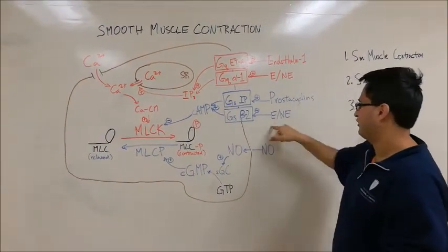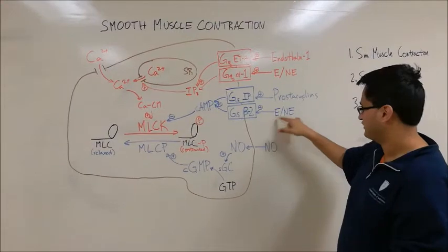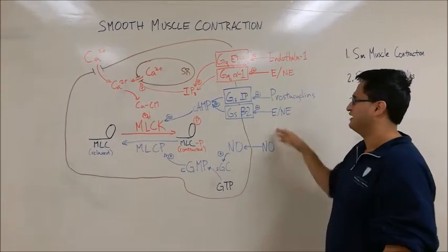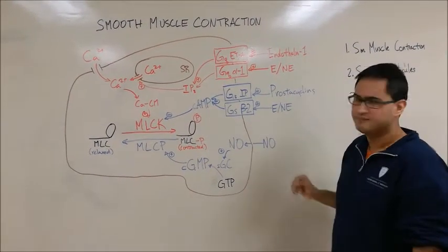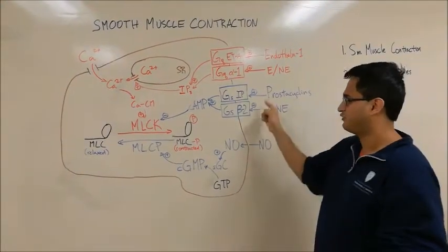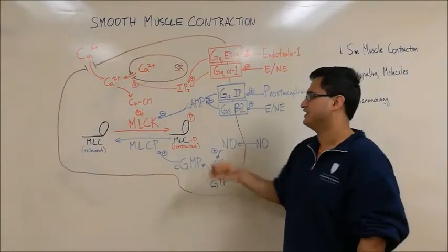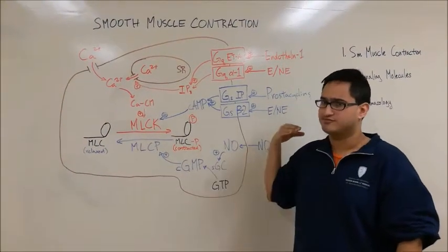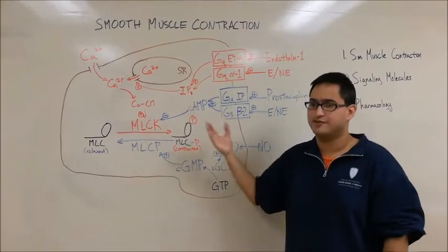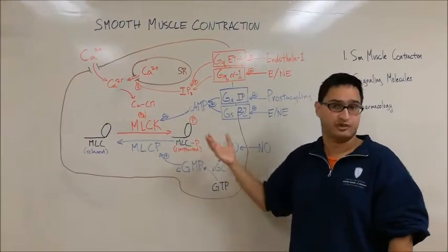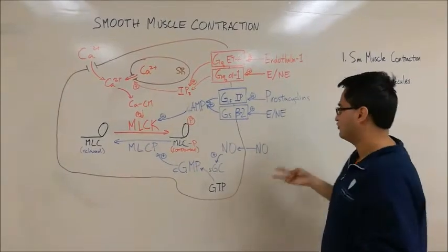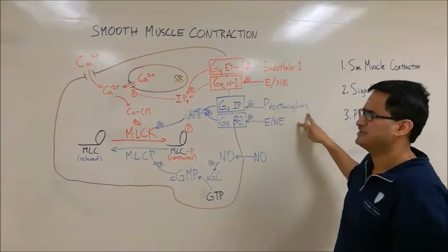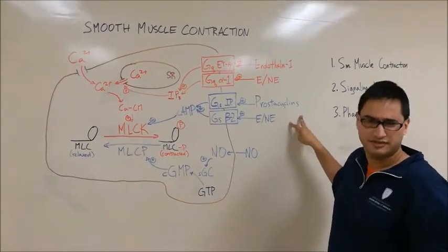Epinephrine and norepinephrine can also bind to the beta-2 receptor, and through the same cAMP pathway, they lead to inactivation of MLCK, promoting smooth muscle relaxation and therefore vasodilation. So these two promote essentially the same pathway but bind to different receptors on the cell.